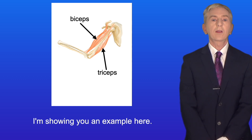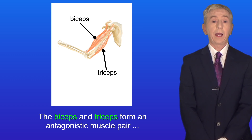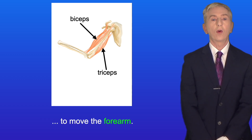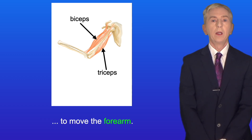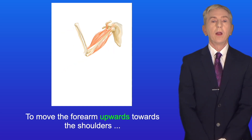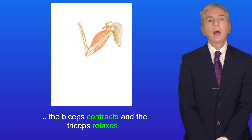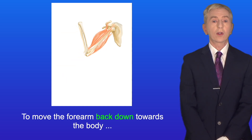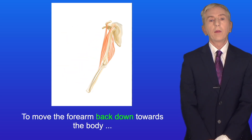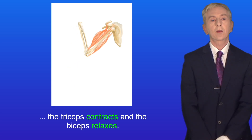Here is an example. The biceps and triceps form an antagonistic muscle pair to move the forearm. To move the forearm upwards towards the shoulders, the biceps contracts and the triceps relaxes. And to move the forearm back down towards the body, the triceps contracts and the biceps relaxes.